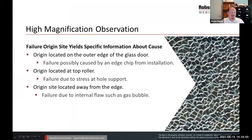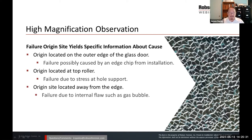High magnification observations look for failure origin sites that yield specific information about the cause. If the failure origin site is located at the outer edge of the glass door, failure possibly was caused by an edge chip from installation. If the failure origin is located near the top roller, failure probably is due to stress at the hole support. If the failure origin is located away from the edge within the interior of the glass, failure probably is due to internal flaws such as a gas bubble.